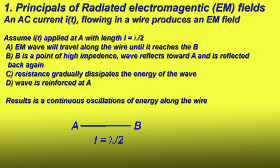This is the principle of the electromagnetic fields. It is an AC current flowing in a wire producing an EM field, resulting in a continuous oscillation of energy along the wire.